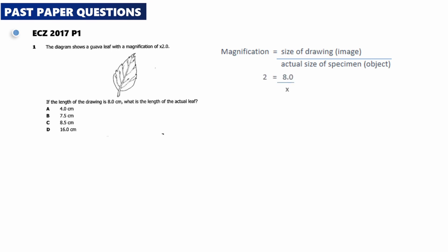We cross multiply: 2 times x equals 2x. So 2x equals 8.0. Then we divide both sides by 2, 2 into 2, 2x, and then 2 into 8.0, 4.0. So x equals 4.0. The correct answer is A, 4.0 centimeters.